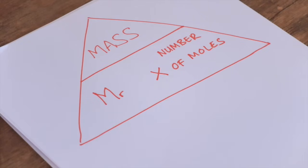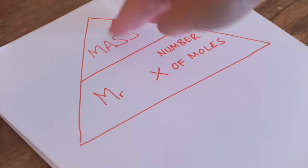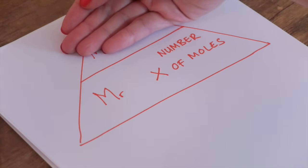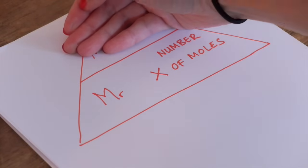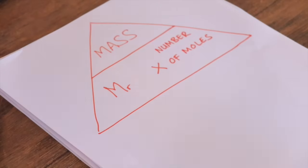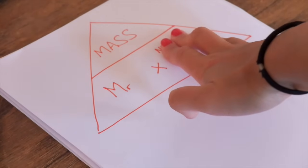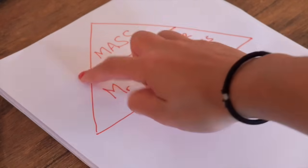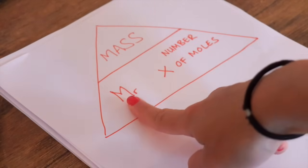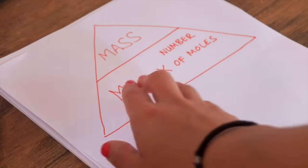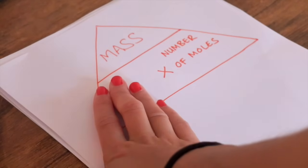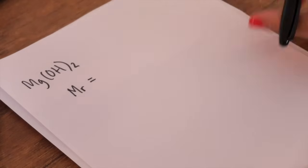Let's quickly talk about the formula triangle — this will be your triangle, which you need to be using all the time. I really recommend formula triangles because they make everything much more straightforward and you need to learn less. When using formula triangles: if you want to calculate mass, cover the value you're looking for — mass — and therefore to calculate mass you do relative formula mass times number of moles. If you want to calculate number of moles, cover moles and you do mass divided by Mr. If you want to find Mr, cover Mr and you divide mass by number of moles.